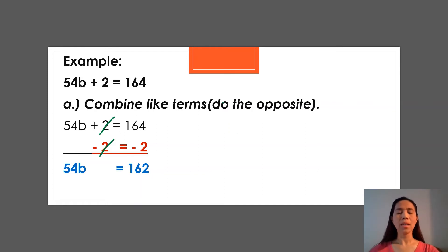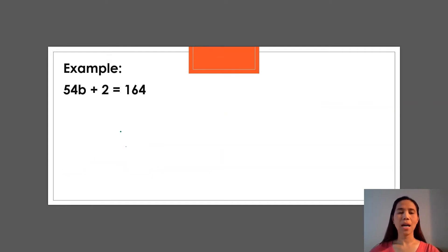And the opposite is division. So the opposite of multiplication is division. So that means we can divide both sides by 54. So let's do it. So 54b. That's the second step now. Isolate the variable.